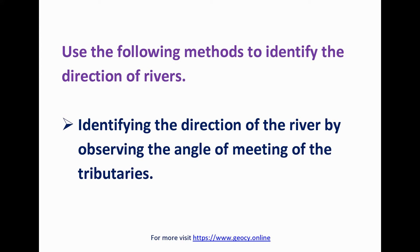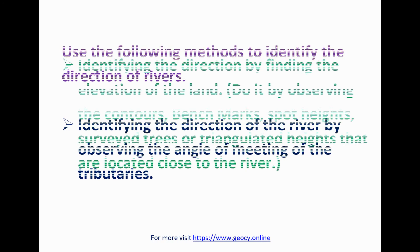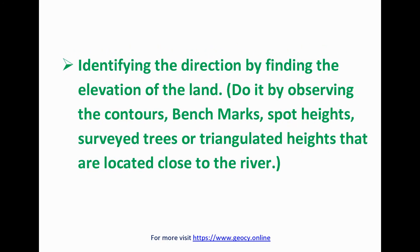Identifying the direction of the river by observing the angle of meeting of the tributaries. Identifying the direction by finding the elevation of the land — done by observing the contours, benchmarks, spot heights, surveyed trees, or triangulated heights located close to the river.